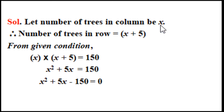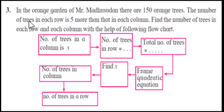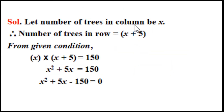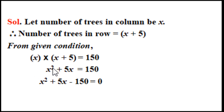Let the number of trees in column be x. Therefore number of trees in row is x plus 5, since the row has five more trees than the column. From the given condition, total number of trees is 150. So x(x plus 5) equals 150. Expanding: x squared plus 5x equals 150, giving x squared plus 5x minus 150 equals 0.